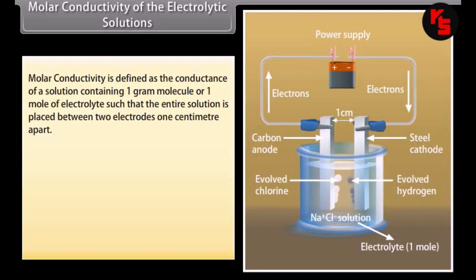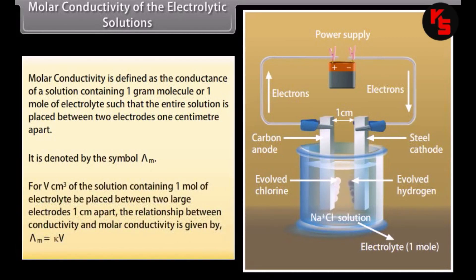Molar conductivity of electrolytic solutions. Molar conductivity is defined as the conductance of a solution containing 1 gram molecule or 1 mole of electrolyte such that the entire solution is placed between two electrodes 1 cm apart. It is denoted by the symbol λ_m. For V cm³ of the solution containing 1 mole of electrolyte placed between two large electrodes 1 cm apart, the relationship between conductivity and molar conductivity is given by: λ_m = κ × V.